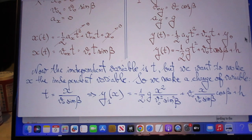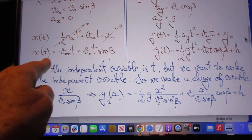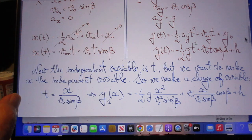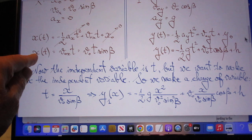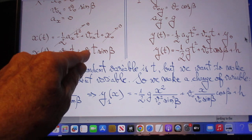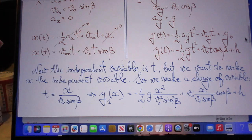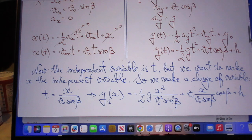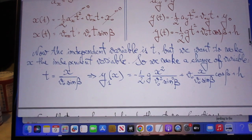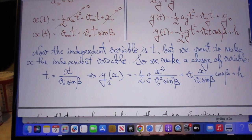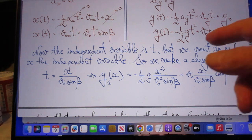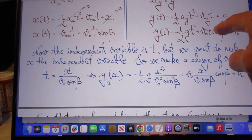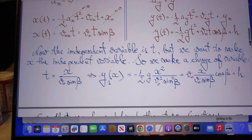So here you get a trivial result for x. x as a function of time is v_0 t sine beta. On the right side you get the classical equation for an object thrown in gravity: one half a t squared plus v_0 t plus y_0.